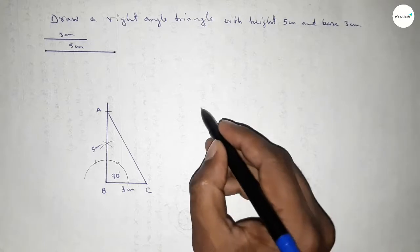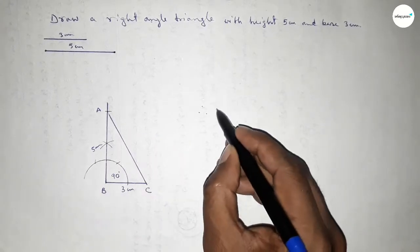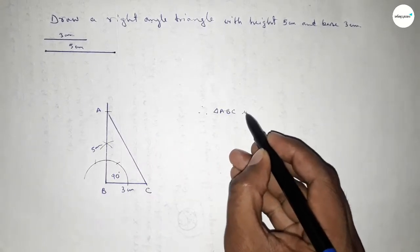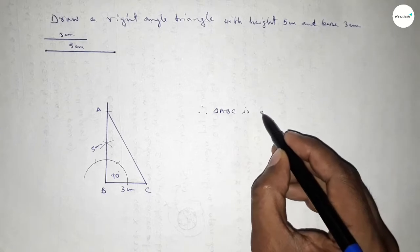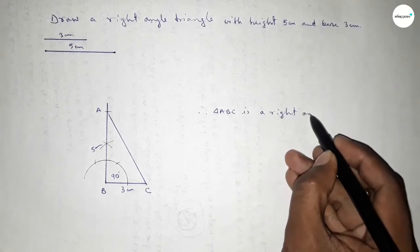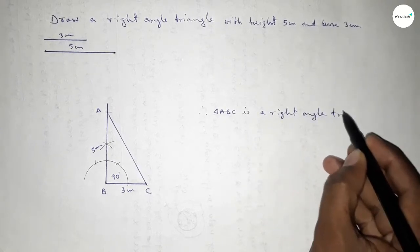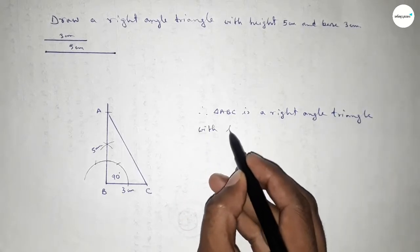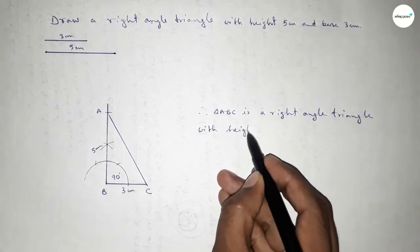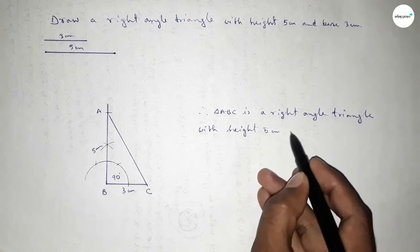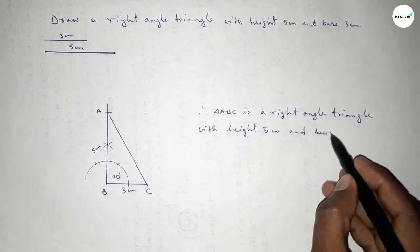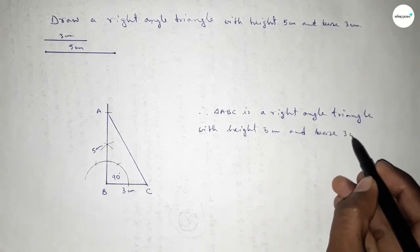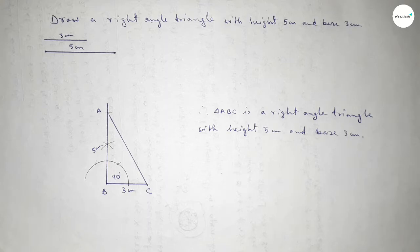Therefore triangle ABC is a right angle triangle with height 5 centimeters, base 3 centimeters, and angle B equal to 90 degrees. That's all. Thanks for watching. If this video is helpful to you, please share it with your friends, and please like and comment on the video.